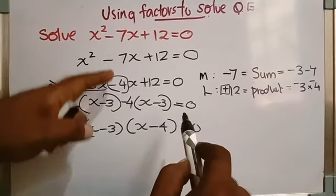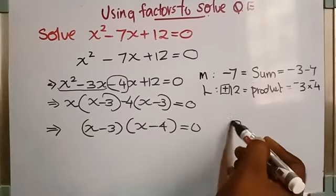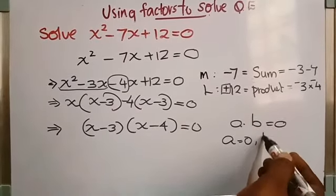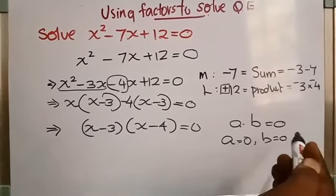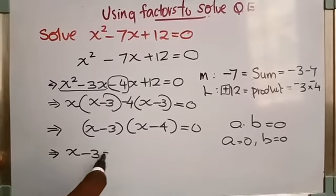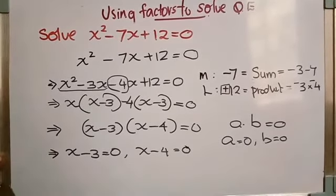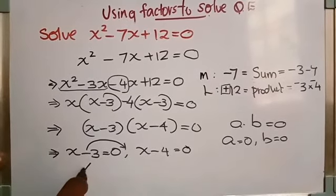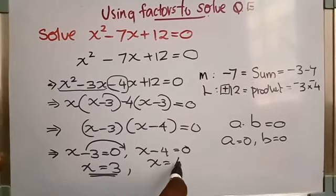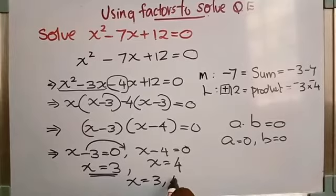These are all steps we learned already — the only new item is setting it equal to zero. Now it looks like a into b equals 0, which implies either a equals 0 or b equals 0. So x minus 3 equals 0 gives x equal to 3, and x minus 4 equals 0 gives x equal to 4. The values of x are 3 and 4.